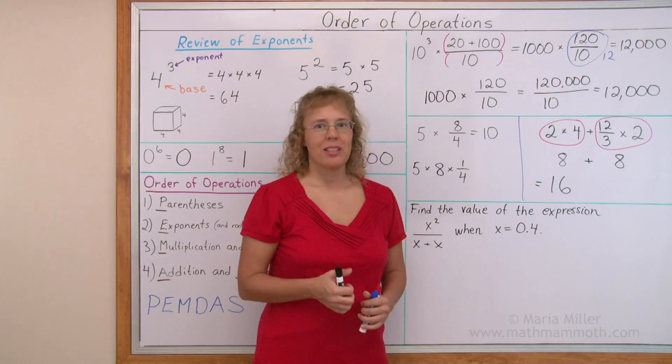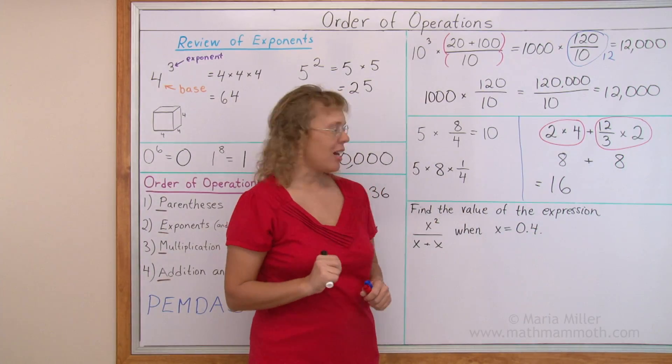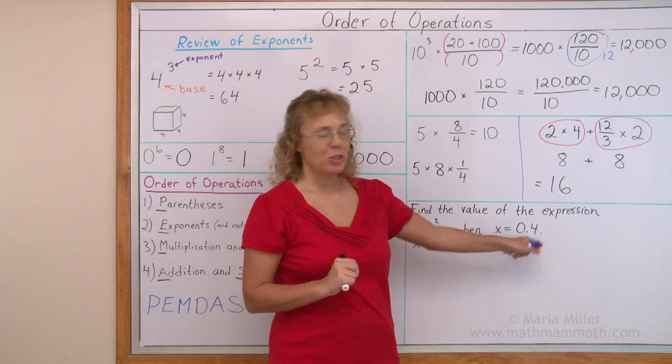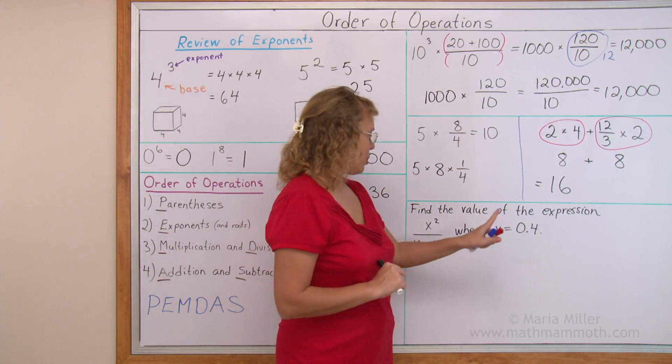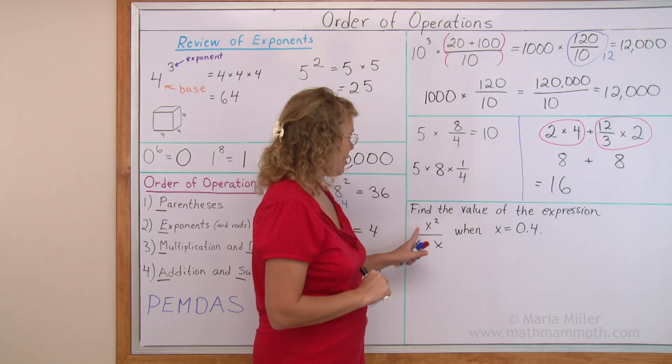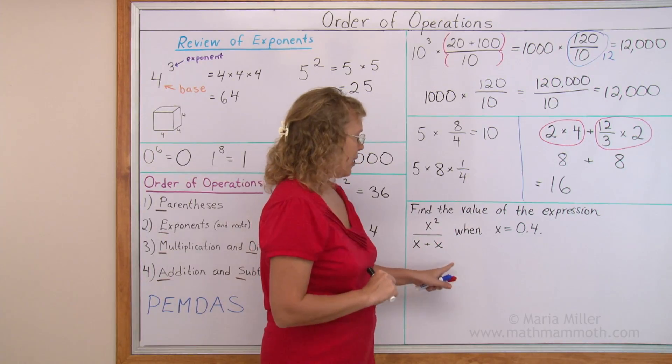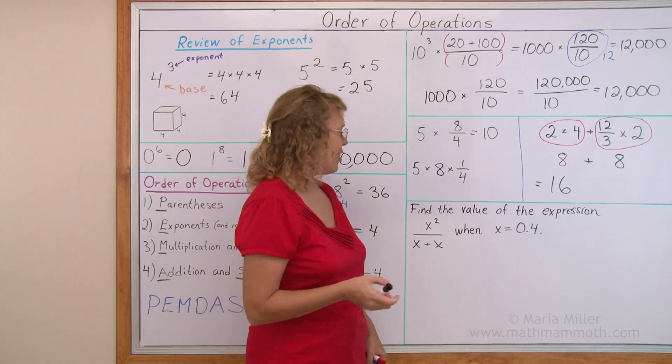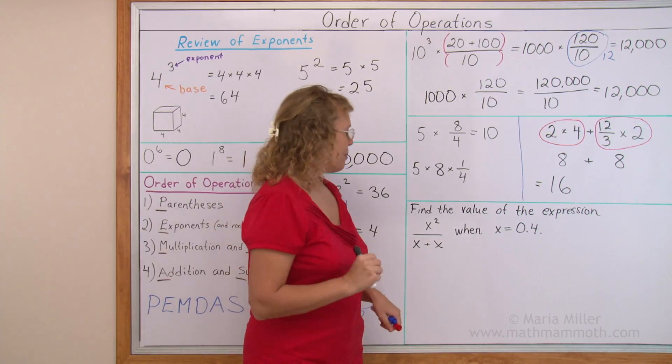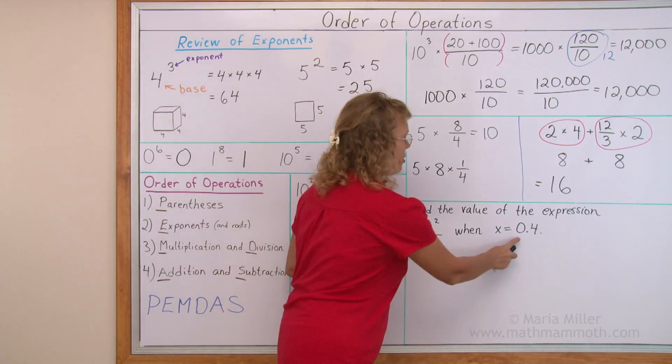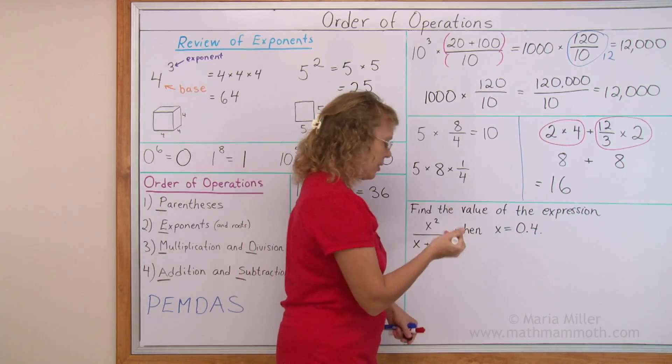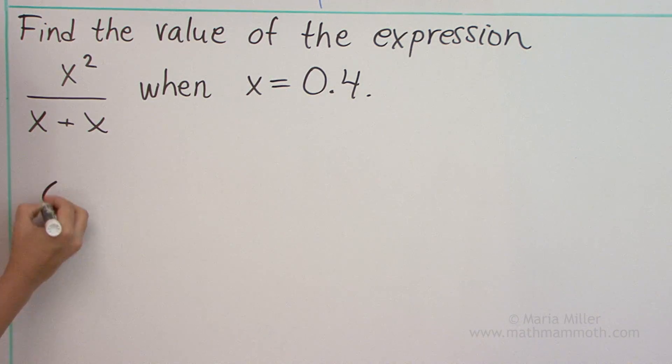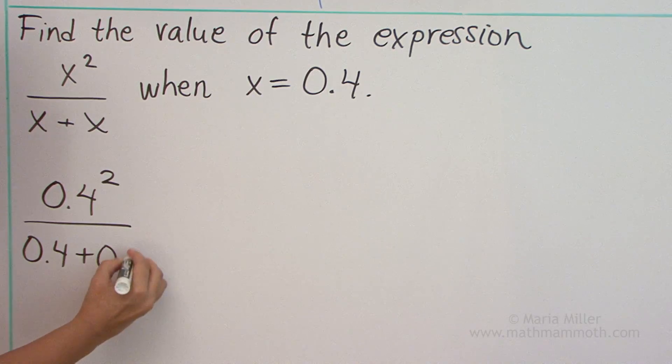Now my last example is maybe a little bit more difficult, simply because we have a decimal number to use. Find the value of the expression x squared divided by x plus x, when x equals 0.4 or 4 tenths. Okay, find the value of this expression. That means we need to substitute this number in place of x over here. So let's do that. I write 0.4 or 4 tenths squared over 4 tenths plus 4 tenths.